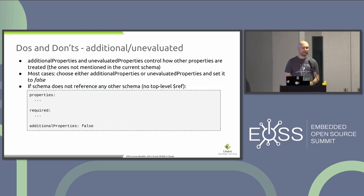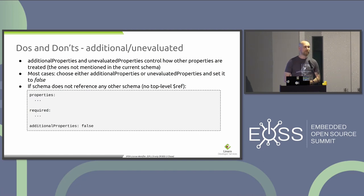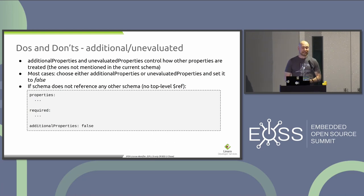Bindings finish with either 'additionalProperties: false' or 'unevaluatedProperties: false'. These keywords determine how other properties — those not explicitly mentioned in the binding — will be evaluated. They can come from DT schema itself or from other referenced schemas. For almost 99% of cases you'll use one of these set to false. If your binding does not reference another schema at the top level — no top-level $ref — then almost certainly you want 'additionalProperties: false', meaning only the listed properties are expected and nothing else.